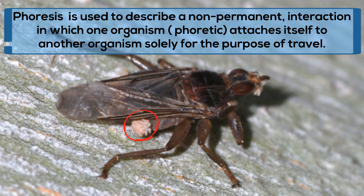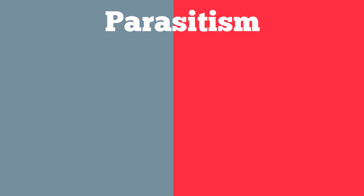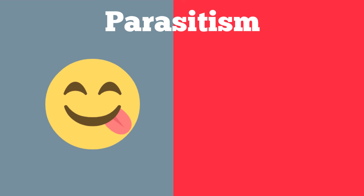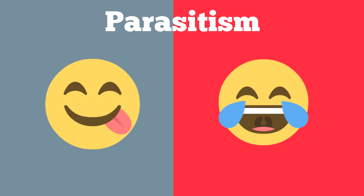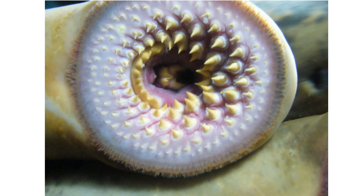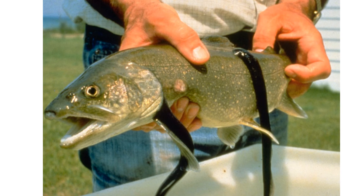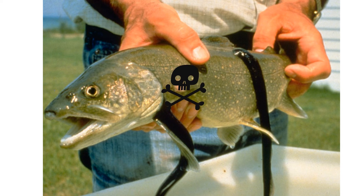And finally, we have parasitism — one benefits, yet the other is harmed. Lampreys, which are these strange-looking primitive fish, have a very limited digestive system. They attach and feed on the body of other fish with more advanced digestive systems, and many times it will lead to the death of the host fish.